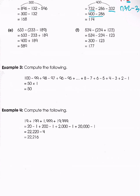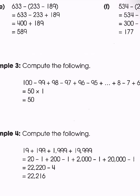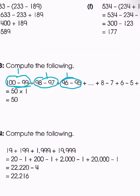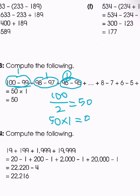Next, it says compute the following. We have a long list and it seems impossible to add and subtract all of them. But an easy way is to group them into pairs: 100 minus 99 equals 1; 98 minus 97 equals 1; 96 minus 95 equals 1. Since we have 100 numbers and each group involves two numbers, we have 50 groups each equal to 1. So 50 times 1 equals 50.